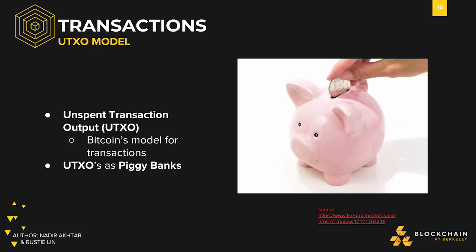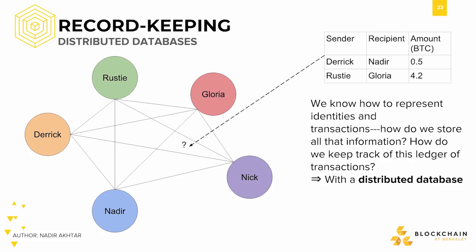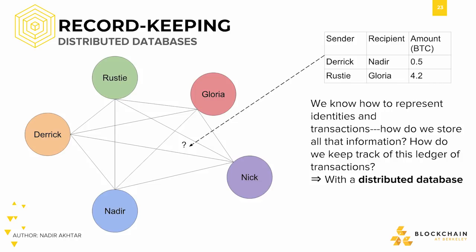We then looked at Bitcoin's model for transactions, the UTXO model, and showed you how they, like piggy banks, can only be used once. We took you through some fascinating demos that demonstrated exactly how the UTXO process works. We explained why information has to be distributed between peers in order to prevent any one person from having control of the truth.